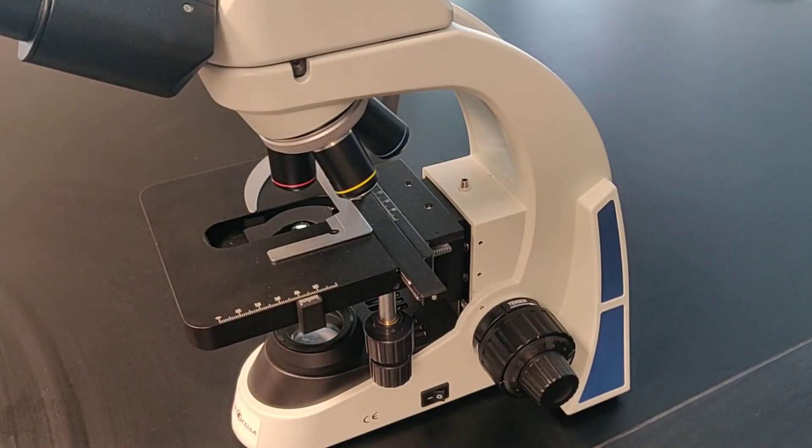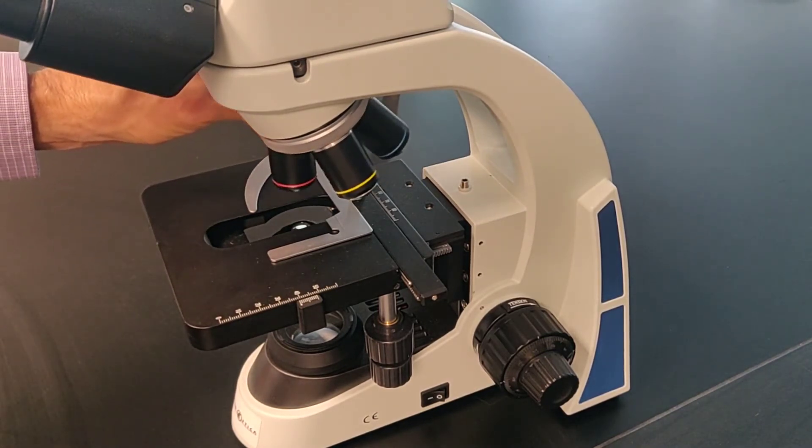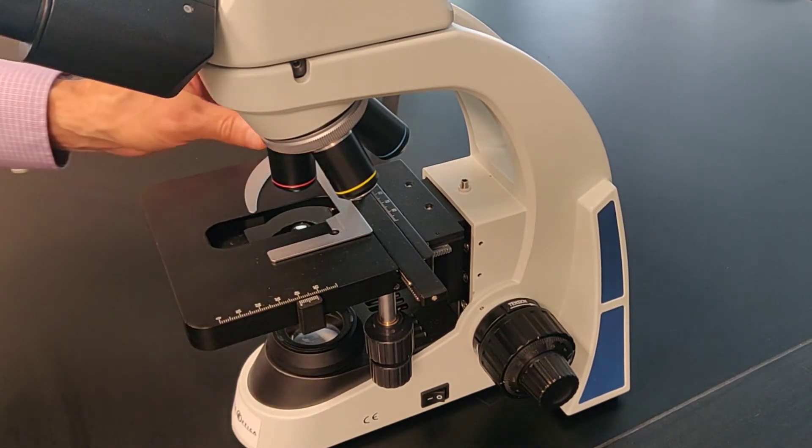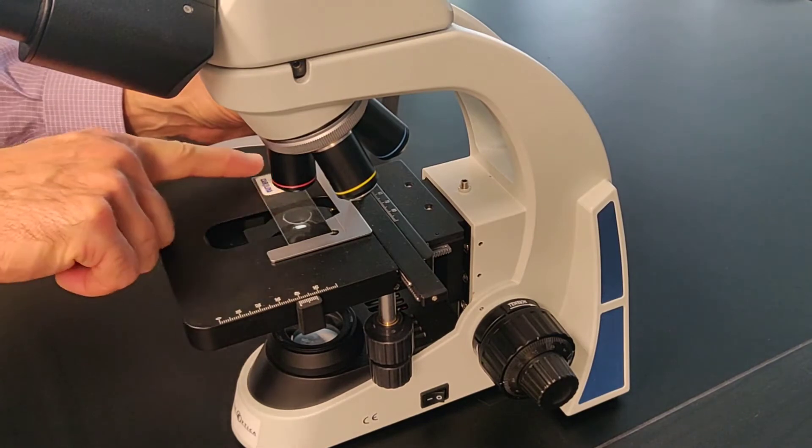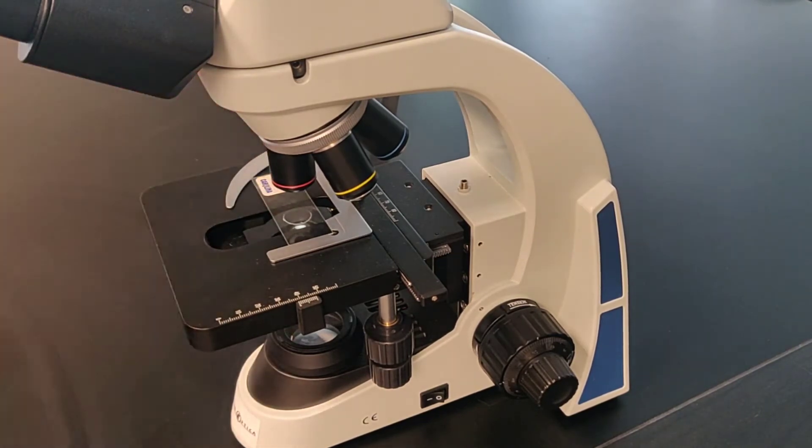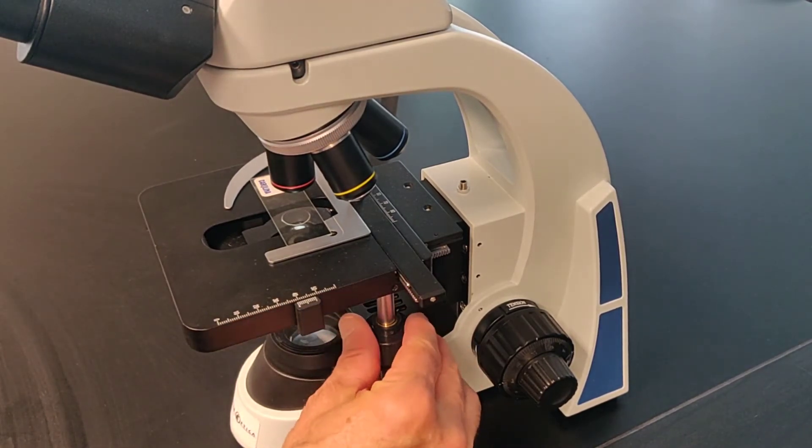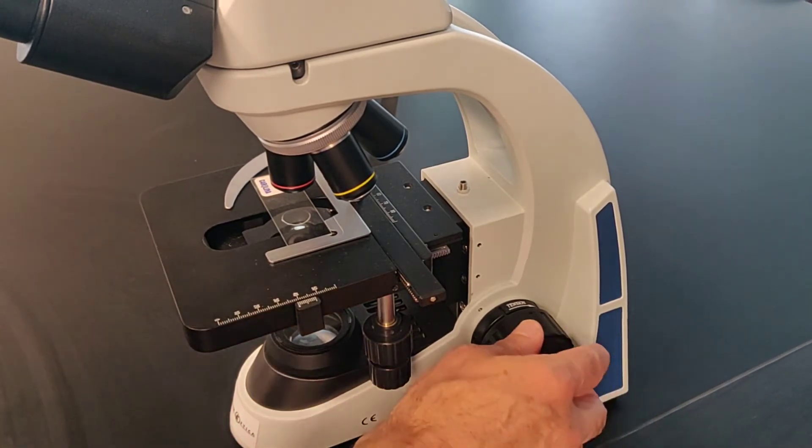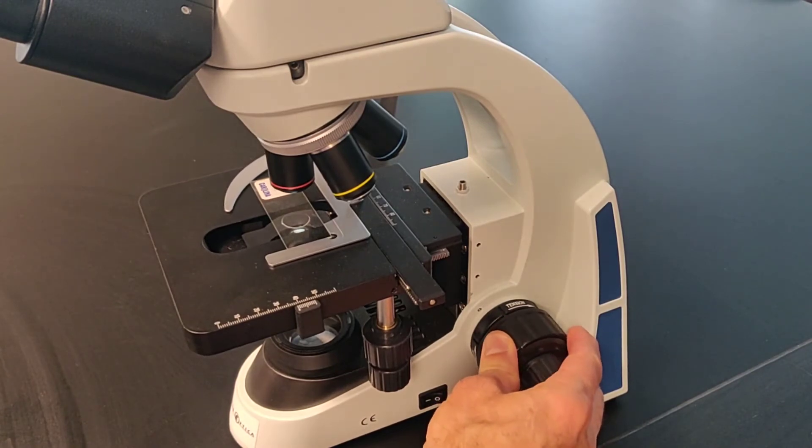Light microscopes come with a selection of objective lenses that screw into a rotating nose piece so that it's easy to select between different levels of magnification. When mounting a slide, always start with the shortest, lowest power lens. This lens is known as the scanning lens and is usually 4x magnification. The power of the lens is stamped on the outside of each lens.